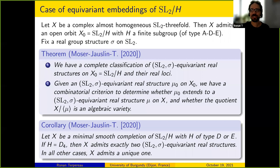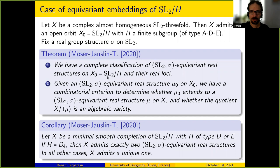It seems to be a general observation that each time we look at a real structure on a minimal variety — smooth projective with Picard rank 1 — there is always at most one real form. I don't know whether this is a general fact, but it's worth noticing.